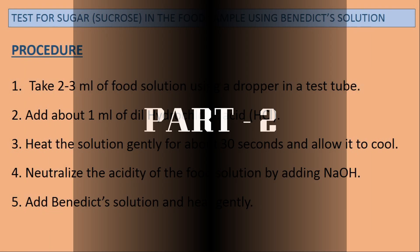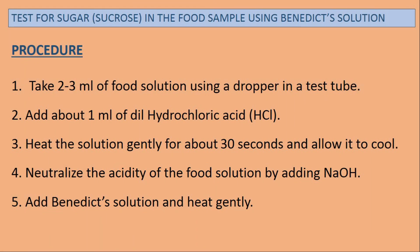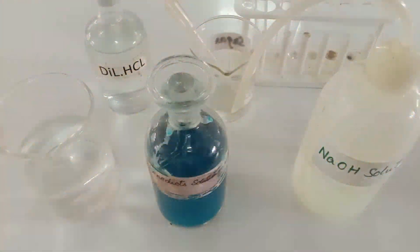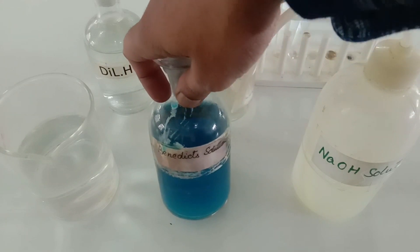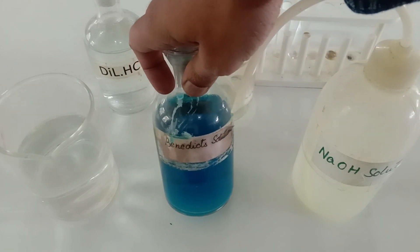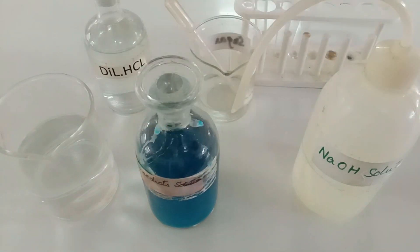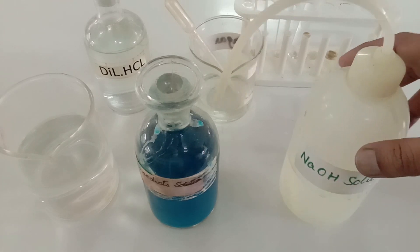There is another test for sucrose sugar in which we are going to require Benedict solution. Here we have Benedict solution, which is bluish in color. We are also going to require NaOH solution.